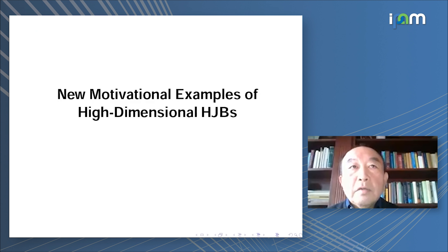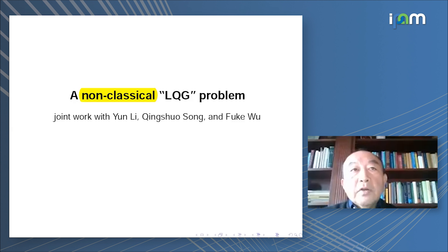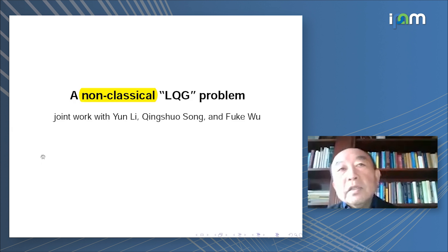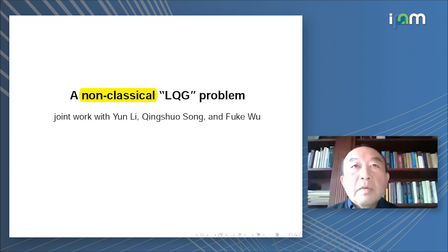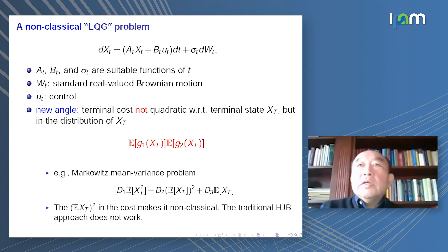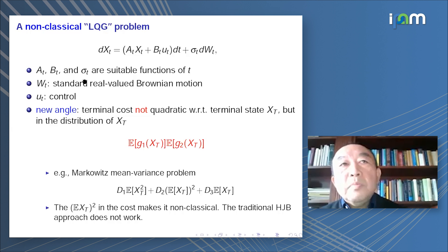This is the first part: motivational examples of high-dimensional HJBs. The first problem is a not-so-classical LQG problem. If everyone is talking about LQ problems, you think of control theory 101 — everyone knows how to control a linear quadratic regulator. Here I'm adding a diffusion term, a Brownian motion. A(t), B(t), and sigma(t) are suitable functions of t, and U is the control.